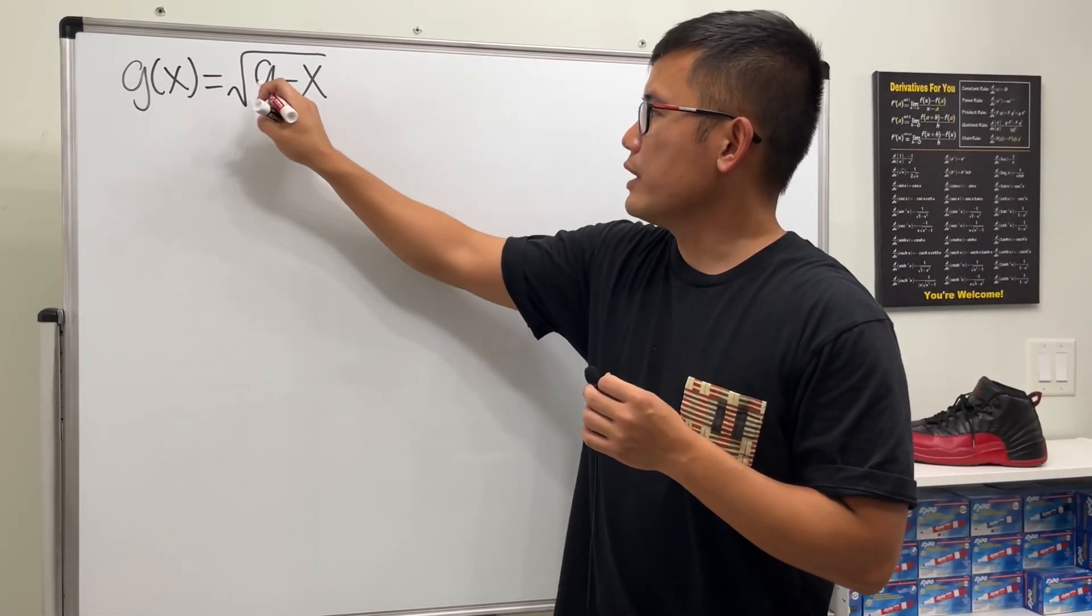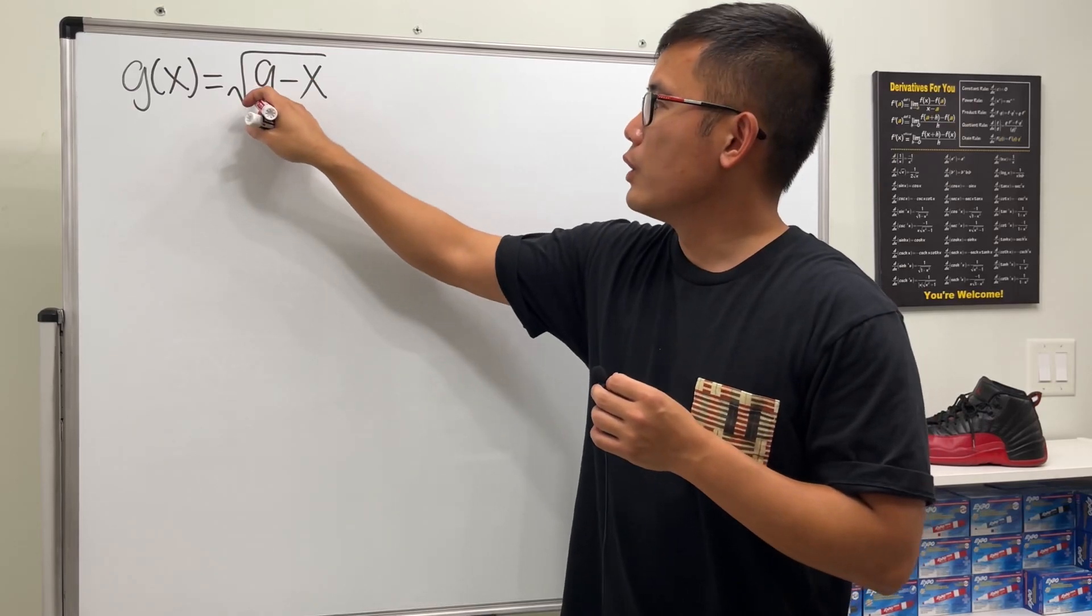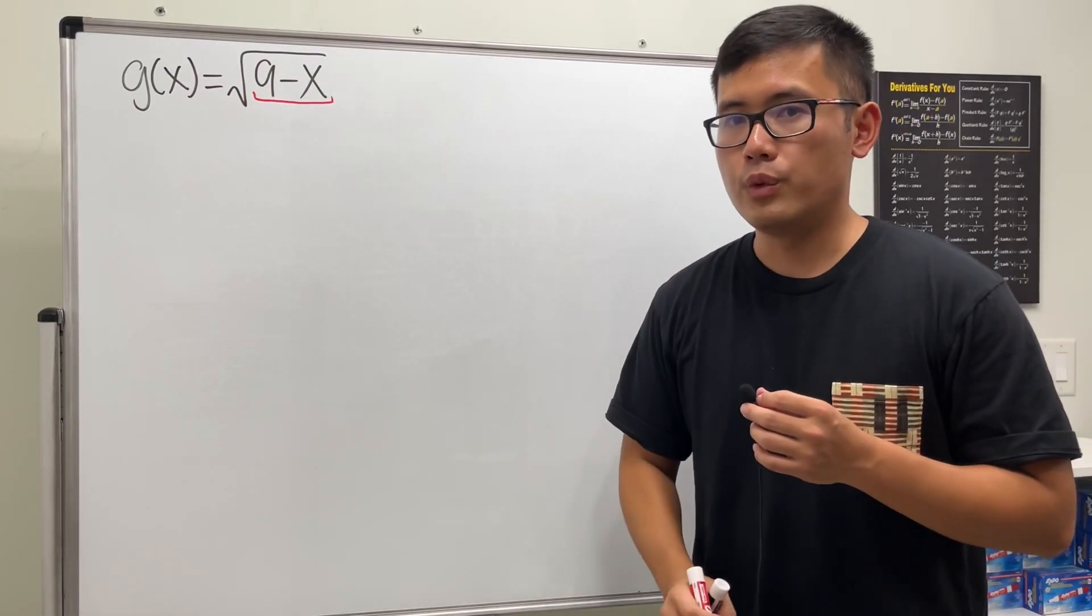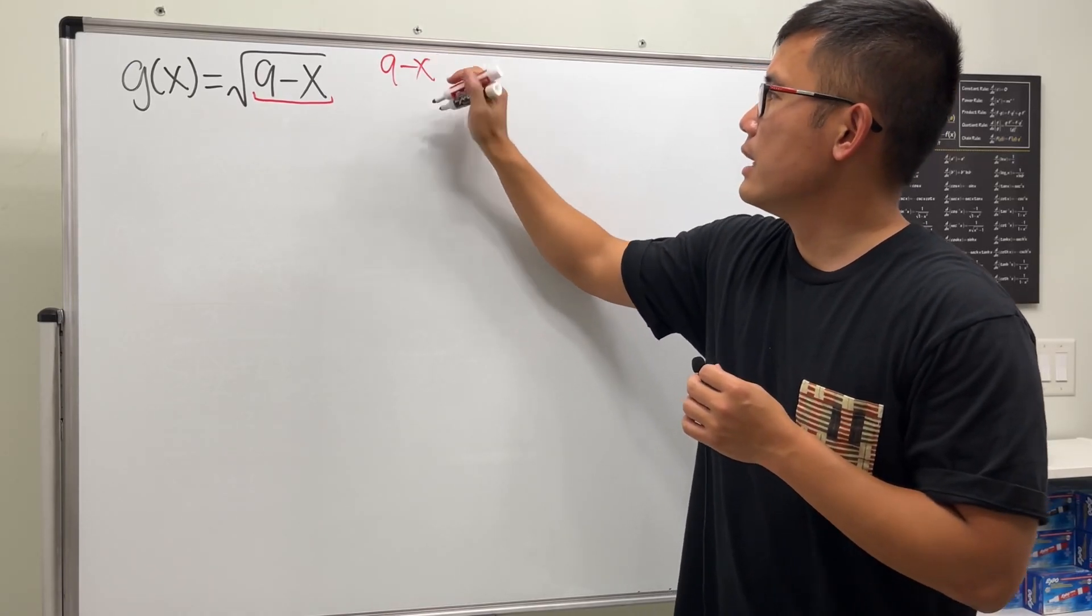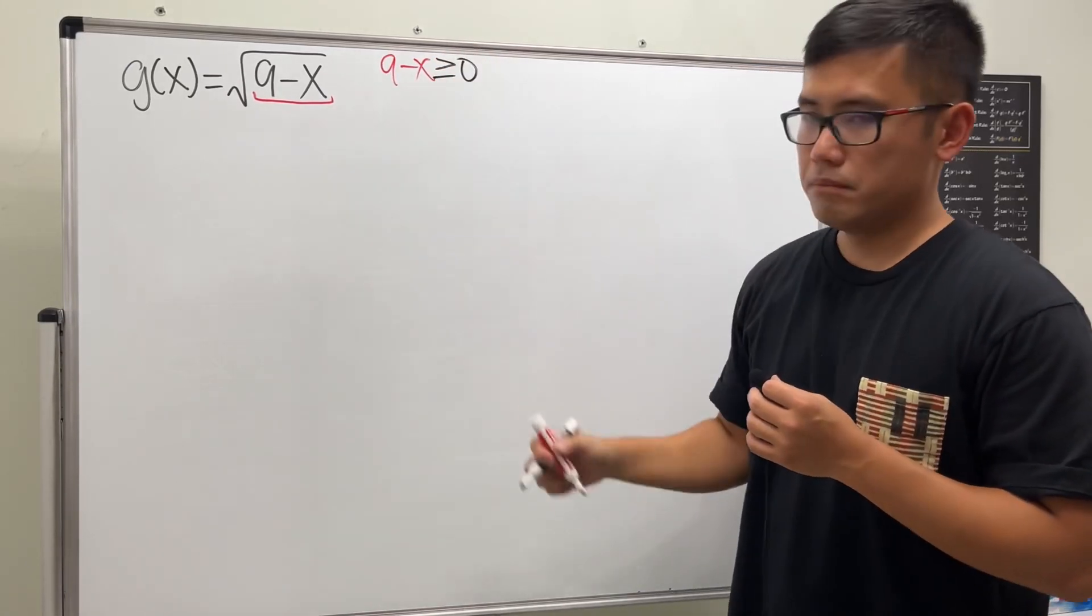Firstly, to find the domain of a square root function, we look at the inside and make sure that the inside is greater than or equal to 0. So I will just put down 9 minus x has to be greater than or equal to 0, that's the restriction.